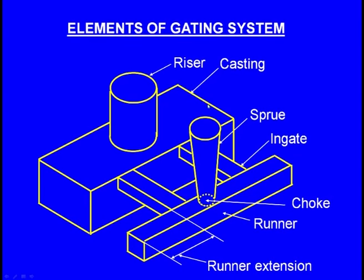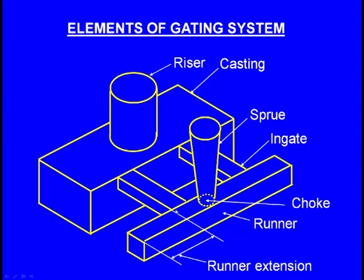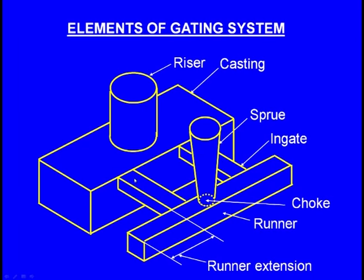Here we come across the runner extension. The molten metal enters through the sprue, passes through the choke, then through the runner and into the ingate. The purpose of the runner extension is that the first molten metal carries certain slags and impurities — these flow straight into the runner extension and are trapped there. The next fresh molten metal then flows through the ingates into the mould cavity.